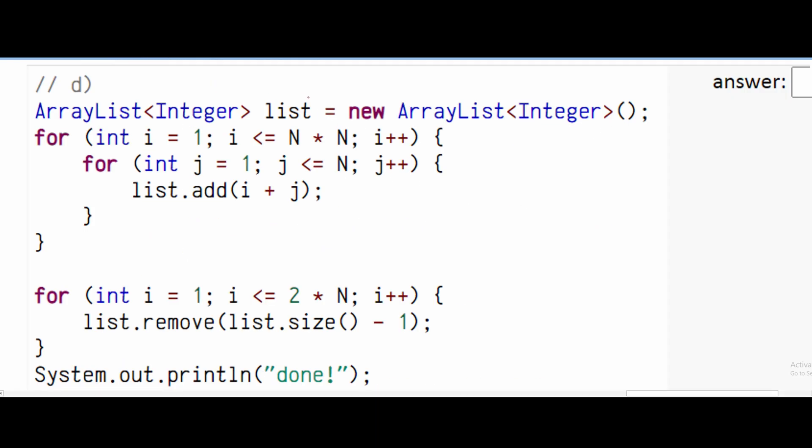For part D, we have an array list and we are adding values into it. So this is going to get executed once for every run that's in here. That means that this is going to be executed n many times.